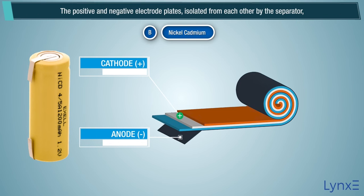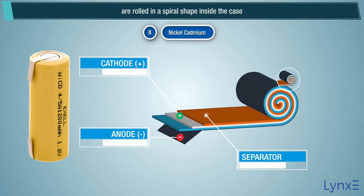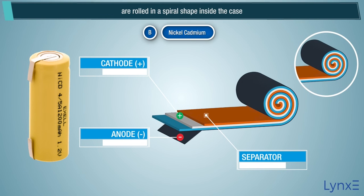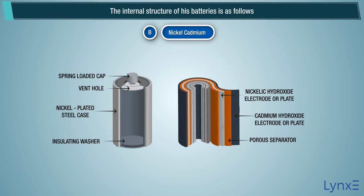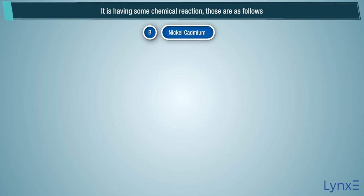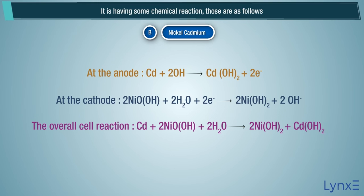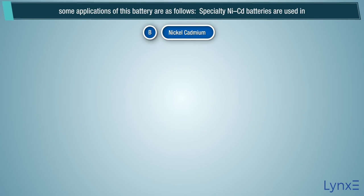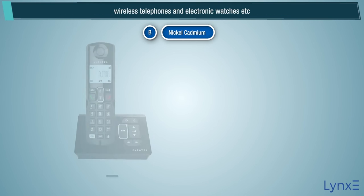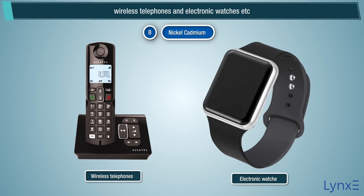The positive and negative electrode plates, isolated from each other by the separator, are rolled in a spiral shape inside the case. The internal structure of these batteries involves chemical reactions. Some applications of this battery include: specialty NiCd batteries are used in wireless telephones and electronic watches, etc.